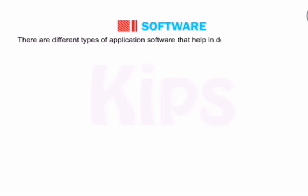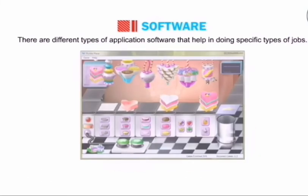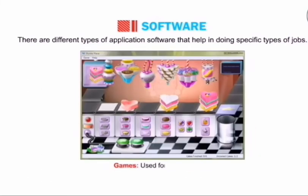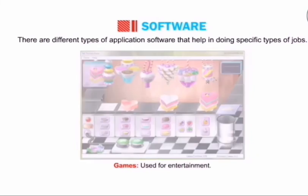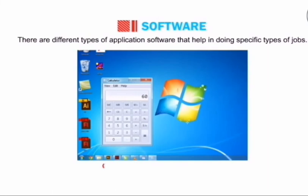There are some types of application software that help in doing specific tasks. For example, MS Paint is an application software used to draw pictures. Games software is used to play games. WordPad or MS Word is used for typing, making corrections, and creating documents. The Calculator is a specific software used to do calculations — addition, subtraction, multiplication, and division.